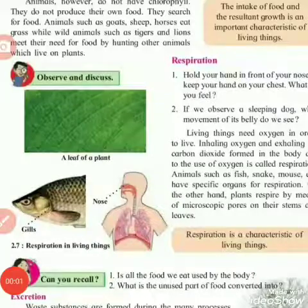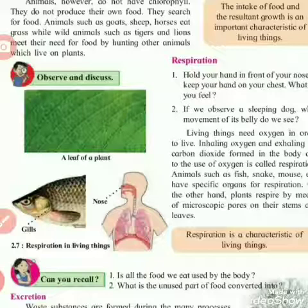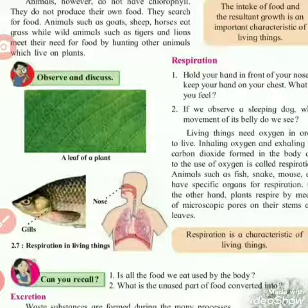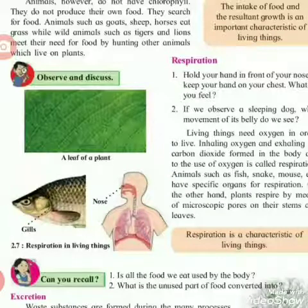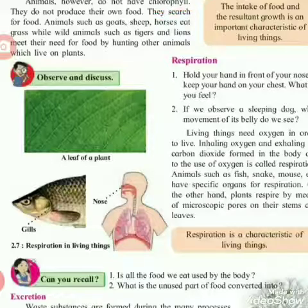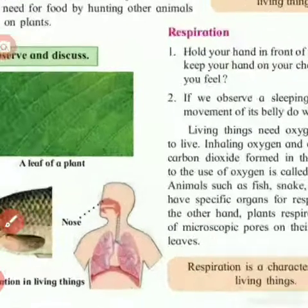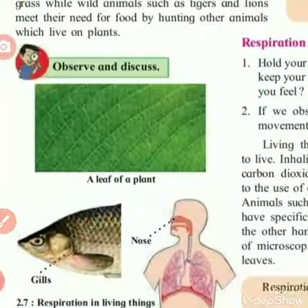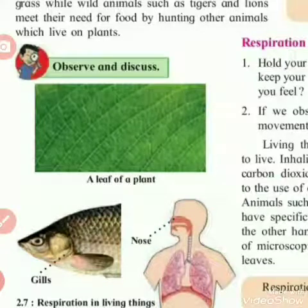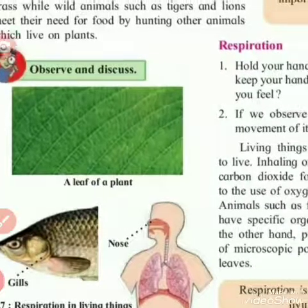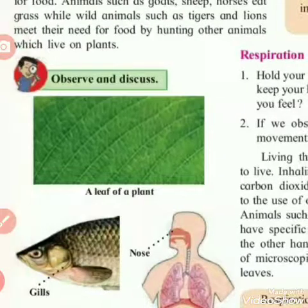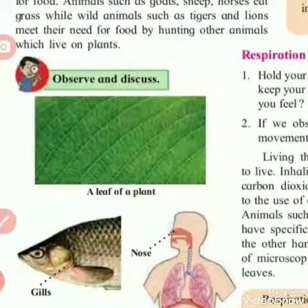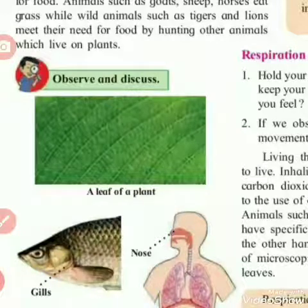The next part is the intake of food by animals. Animals cannot make their own food because there is no chlorophyll in them. Since animals do not have chlorophyll, they search for food. Some animals such as goat, sheep, and horse eat only grass — they are vegetarians.